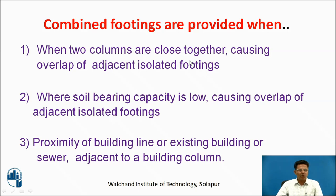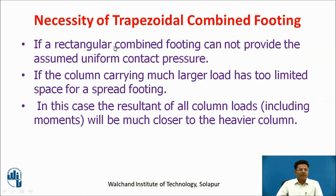Combined footings are also adopted when soil bearing capacity is low, which may cause overlap of adjacent isolated footings. When there is proximity of a building line, existing building, or sewer adjacent to a building column, in such cases we also need to adopt combined footing. If a Rectangular Combined Footing cannot provide assumed uniform contact pressure, we go for Trapezoidal Combined Footing.